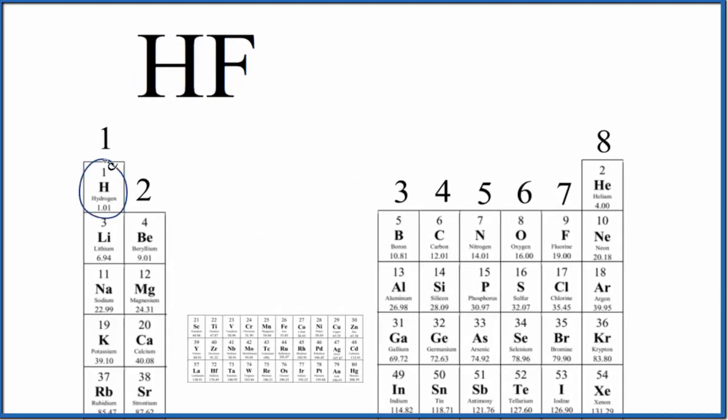Hydrogen right here, that's in group one. All of these have one valence electron. So we have one valence electron for the hydrogen, and then fluorine over here, group 17, sometimes called 7A. These have seven valence electrons. So one plus seven, total of eight valence electrons for the HF Lewis structure.